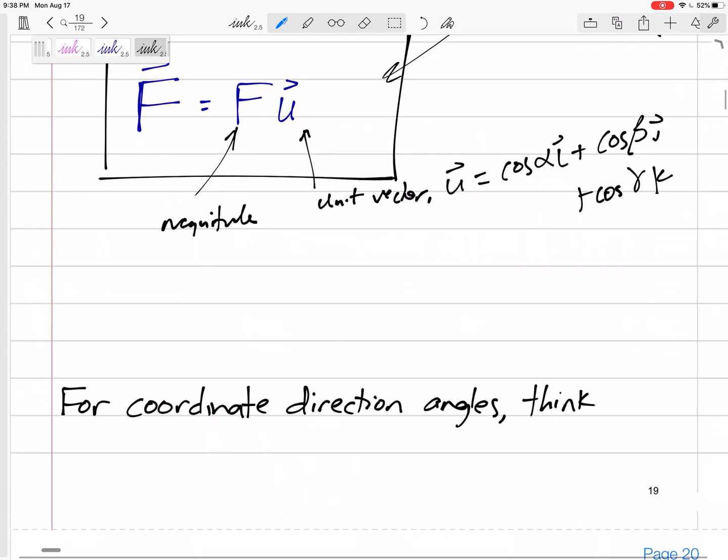So for coordinate direction angles, think F equals Fu. Maybe you know F right here and you know the magnitude, then you can find u. Or maybe you know the magnitude and the u, and you can find F as a vector. There's a number of different ways, but think F equals Fu.